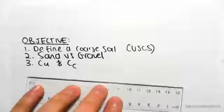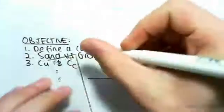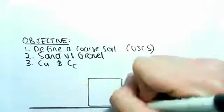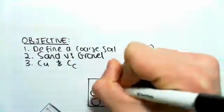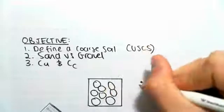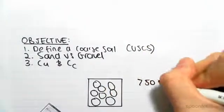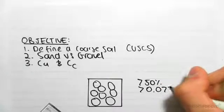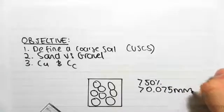So the first thing we need to do is define a coarse soil. We know a fine soil is when a sample of soil has its majority of particle sizes being less than 0.075 millimeters. So a coarse soil is when the majority of the sample has particle sizes greater than 0.075 millimeters in diameter.